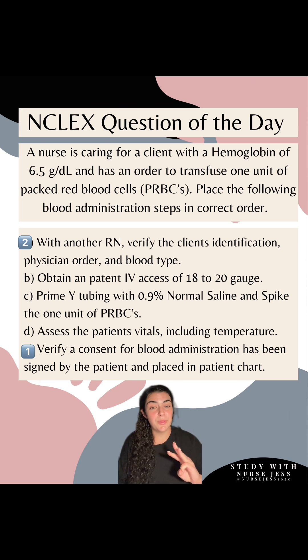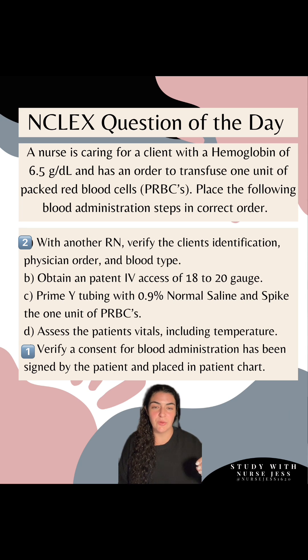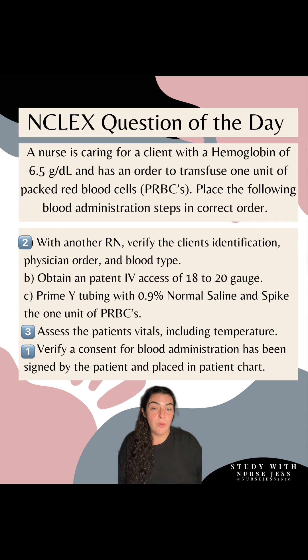Step 3: once we know that everything is verified with another RN and we are good to go on this blood, we're going to move to option D, which is assess the patient's vitals, including temperature.